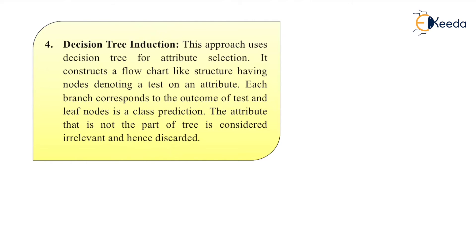Fourth is decision tree induction. This approach uses decision tree for attribute selection. It constructs a flow chart like structure having nodes denoting a test on an attribute. Each branch corresponds to the outcome of a test, and a leaf node is a class prediction. The attribute that is not part of a tree is considered irrelevant and hence discarded.